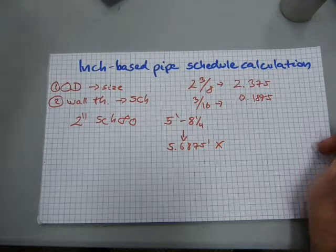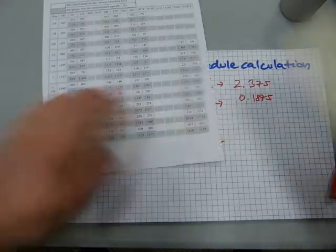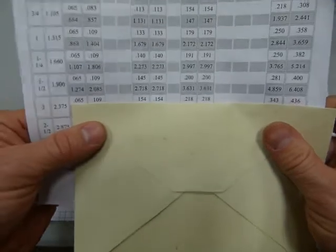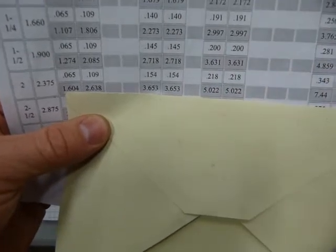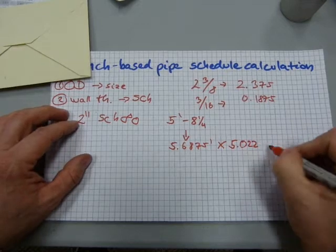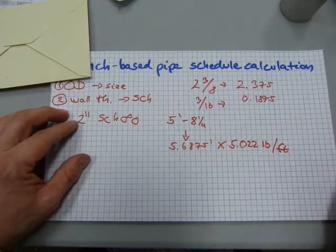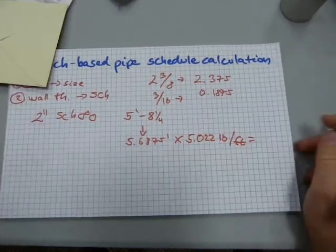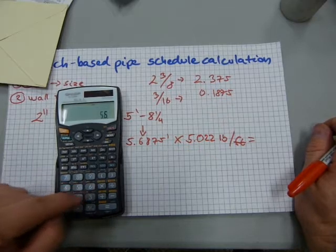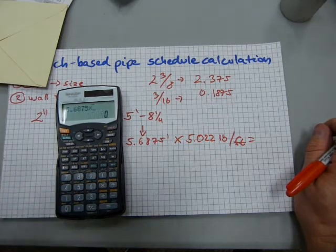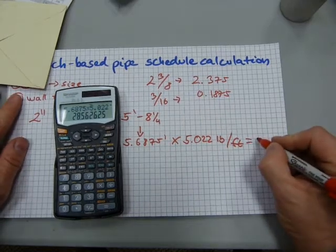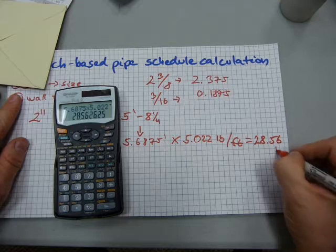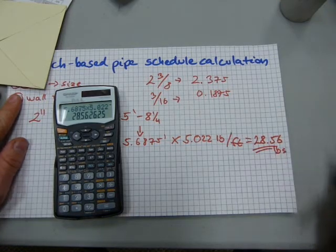So that's how many feet we have: two inch schedule 80, 5.6875 feet of it. And this number needs to be multiplied by the unit weight which is in this schedule right underneath. Two inch pipe, that's the two inch schedule 80, and the weight each foot is 5.022 pounds, per foot. So we need to multiply these two together. 5.6875 times 5.022 equals 28.56 pounds. That's the final answer to this question.